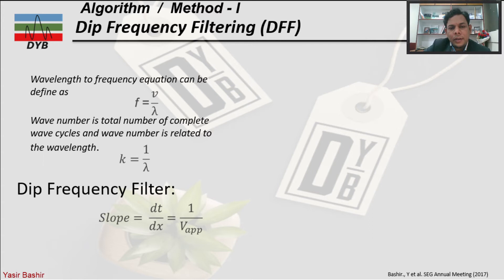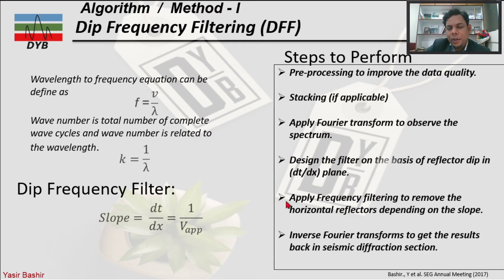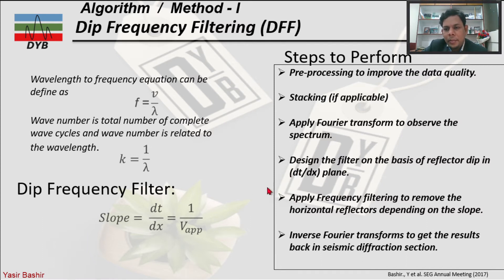The dip-frequency filter is derived based on dt over dx, which equals one over the apparent velocity of the data. The workflow steps are: first, pre-processing to improve data quality and stacking if applicable — since we use zero-offset data, no stacking is applied. Then we apply the Fourier transform to observe the spectrum, design a filter based on the reflector dip in the dt/dx plane, apply the frequency filter to remove horizontal reflectors depending on slope, and finally apply the inverse Fourier transform to recover the seismic diffraction section.